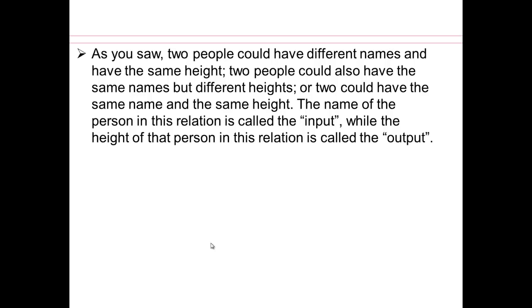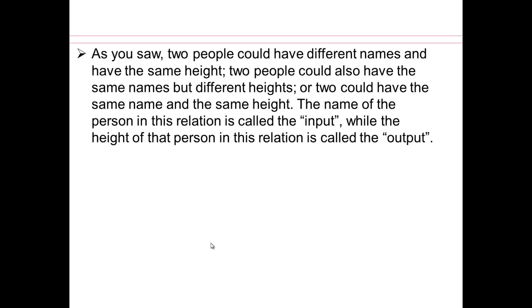So the name of the person in this relation is called the input, while the height of that person is called the output. Well-behaved relations where each input gives a unique output are called functions.